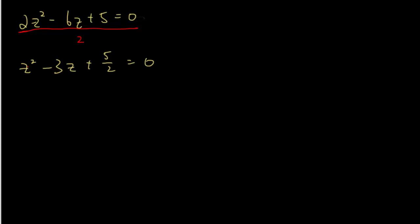And I'll just proceed with the original method of completing the square. So that will be z minus 3 over 2 square plus 5 over 2 minus the square of this number, remember. So that will be 9 over 4 equals 0.